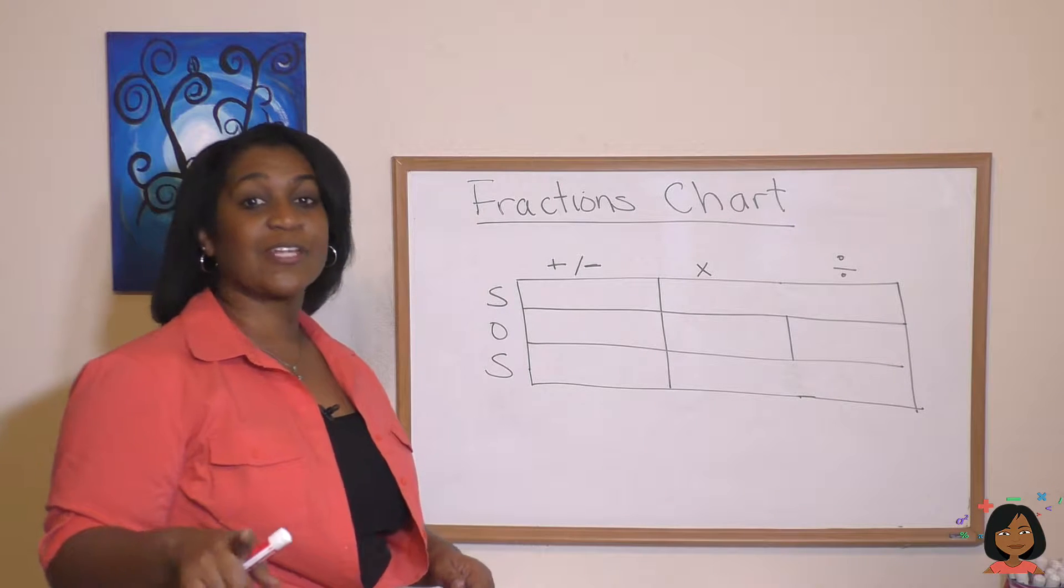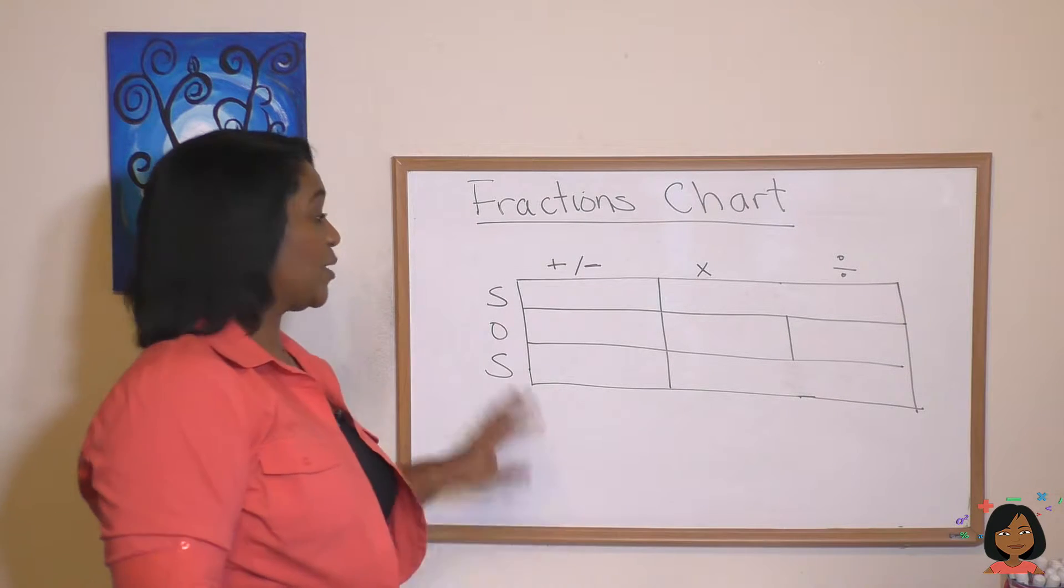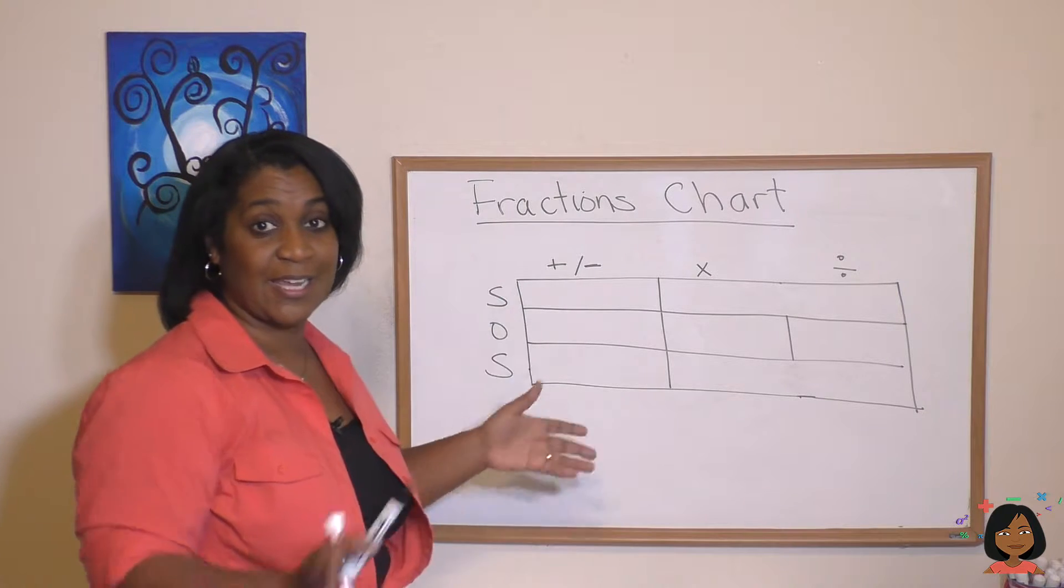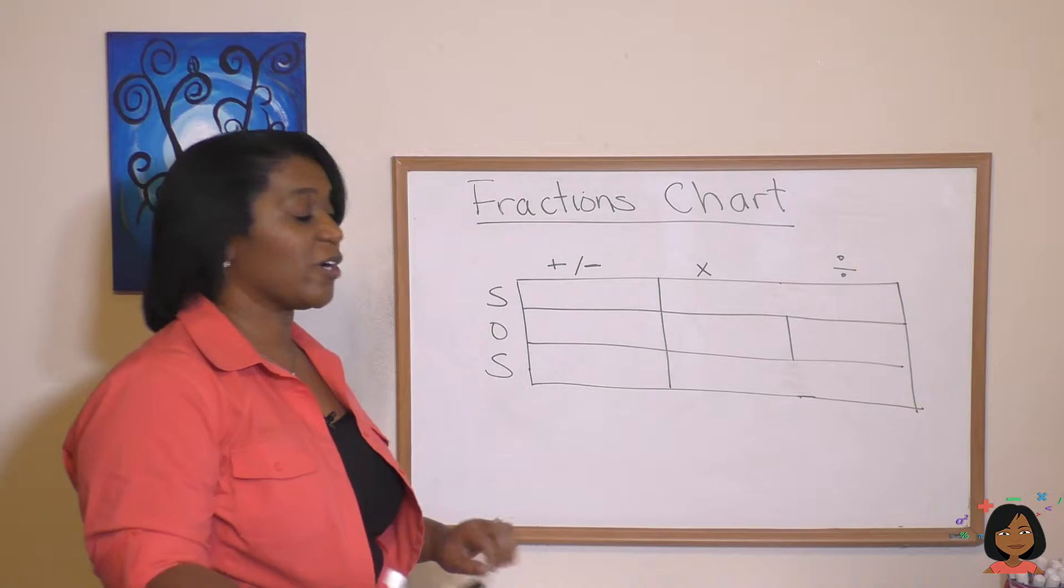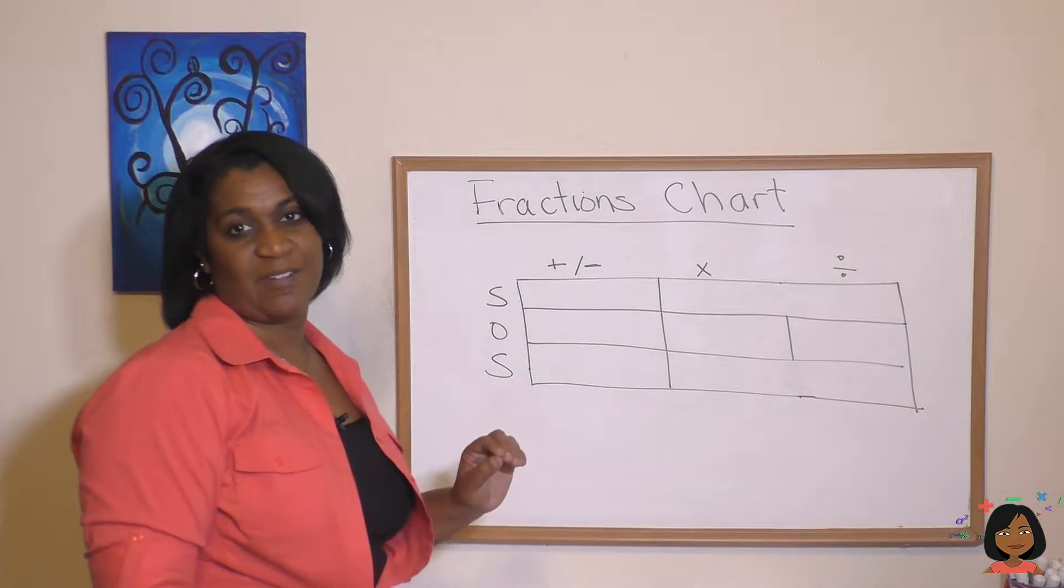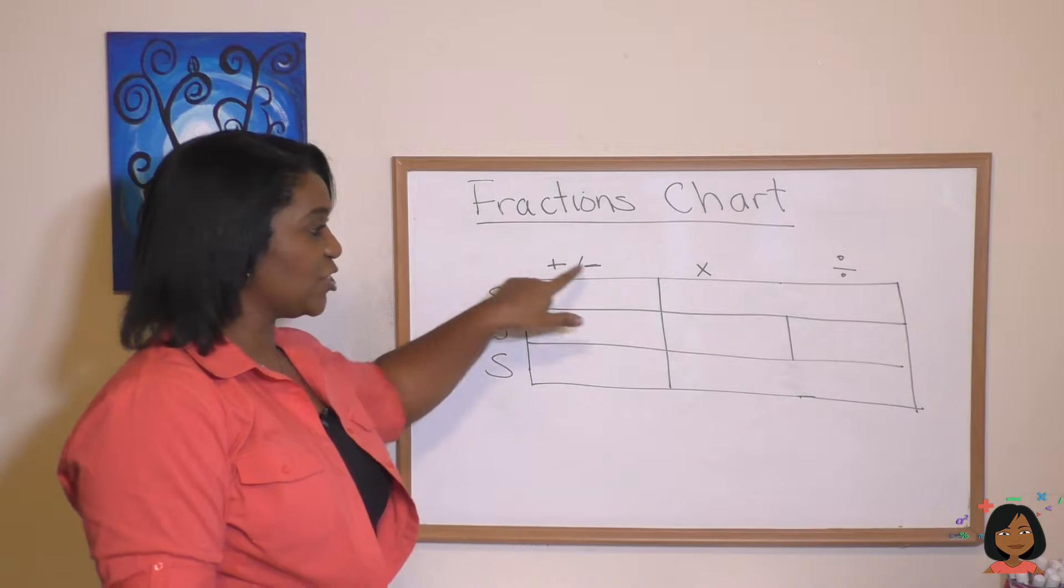You might remember that in an earlier lesson we talked about that SOS technique, right? First we're going to shape our fraction to get it into the right format, then we're going to do our operation, then the last step is we're going to simplify it. Well, what does that look like for each of the operations: addition, subtraction, multiplication, and division?